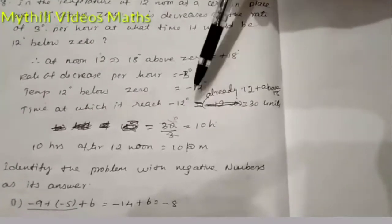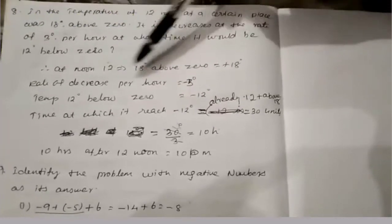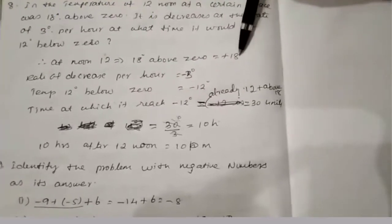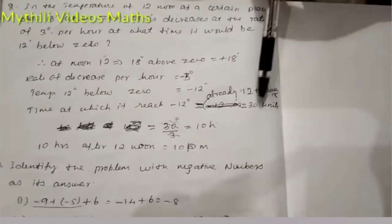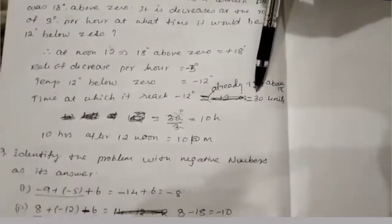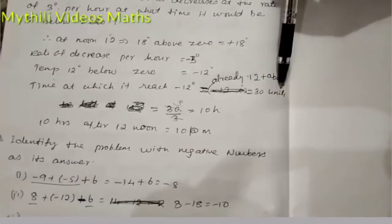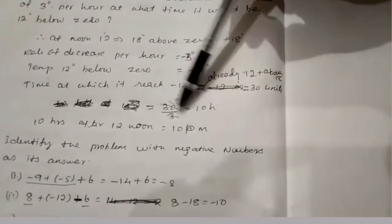that is -12 degrees. Time at which it reached -12 degrees: It's already 12 noon, and above zero is +18 degrees, so 12 + 18 equals 30. So 30 units, and then that equals 30 divided by